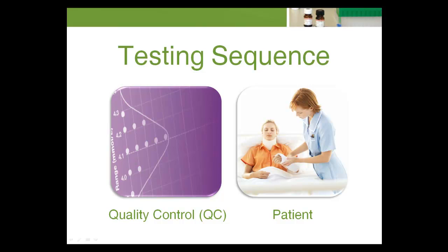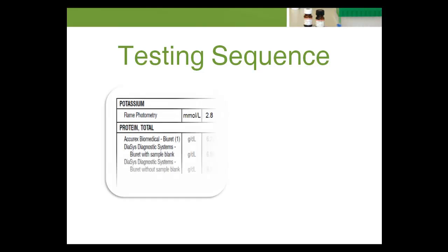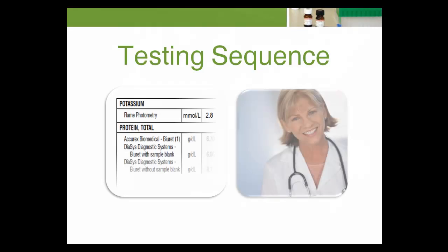Once the test system is validated, patient results can then be used for diagnosis, prognosis, or treatment planning. For example, when a patient's serum is assayed for potassium, the test result tells us how much potassium concentration is present in the blood. This result is then used by the physician to determine whether the patient has a low, normal, or high potassium level.